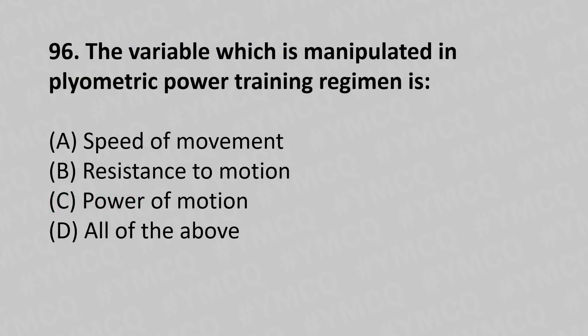Moving to our 96th question. The variable which is manipulated in plyometric power training regimen is: option A speed of movement, option B resistance to motion, option C power of motion, option D all of the above. The answer is option A, speed of movement.